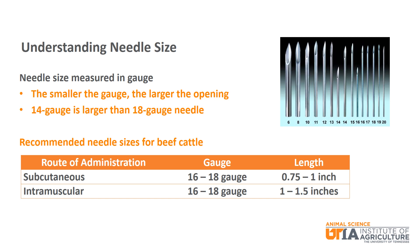Needles come in all sizes. The size of the needle opening is measured by gauge. The smaller the gauge, the larger the needle opening. For example, a 14 gauge needle is much larger than an 18 gauge needle. 16 and 18 gauge needles are recommended for injections to beef cattle. For subcutaneous injections, needles should be 3/4 to 1 inch in length. For intramuscular injections, needles should be 1 to 1.5 inches in length. An 18 gauge needle is recommended for most situations, but there are times depending on cow age, size, and medicine thickness where a 16 gauge needle is appropriate.